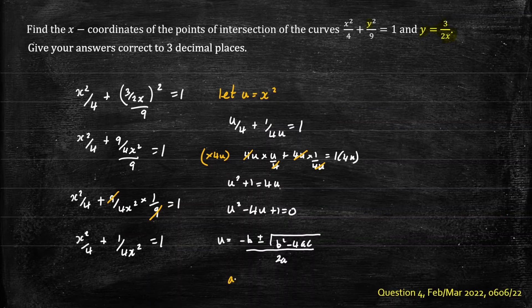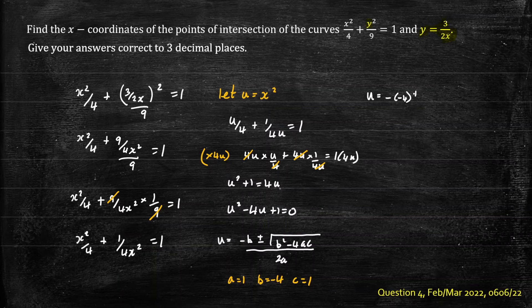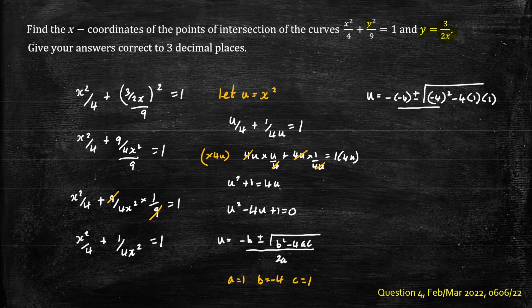In our question a is 1, b is negative 4 and c is 1. Now we substitute our numbers into our formula. We'll have u equals negative negative 4 plus or minus the square root of b squared which is negative 4 squared minus 4 times a times c which are 1 each divided by 2a and a is 1, so that would be 2.